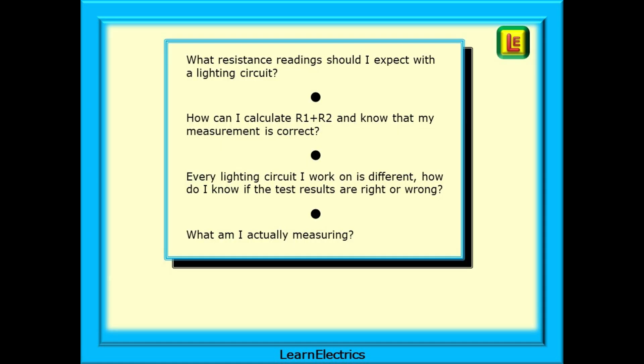Some frequent and recent questions have asked things like: what resistance readings should I expect with a lighting circuit? How can I calculate R1 plus R2 and know that my measurement is correct? Every lighting circuit that I work on is different. How do I know if the test results are right or wrong? And what am I actually measuring? Which wires are under test?